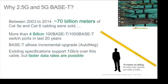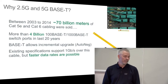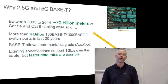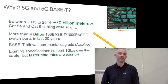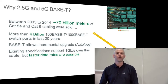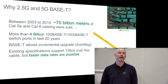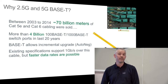We're building 2.5 and 5G Base-T. Most of you will be familiar with 100 Base-T and 1000 Base-T and also 10G Base-T. 100 Base-T is Fast Ethernet — lots of it all around the place. We standardized 1000 Base-T with Gigabit Ethernet in 1999 and 10 Gigabit Ethernet Base-T in 2006.